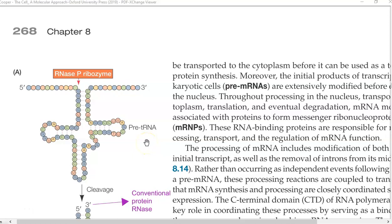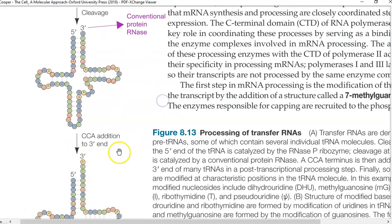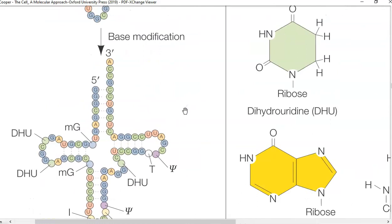Now we look at the modifications in the tRNA molecule. Both the tRNA of prokaryotes and eukaryotes are modified by the following enzymes. First is RNase P, which is involved in cutting the 5' end of the pre-tRNA molecule to form a functional tRNA. In the pre-tRNA, the 3' end is processed by a conventional proteinase RNase, similar to RNase 3 seen in ribosomal RNA processing. This enzyme also adds a CCA sequence to the 3' end. These actions by the enzymes on the pre-tRNA molecule result in a functional tRNA.